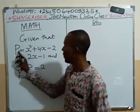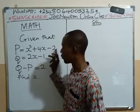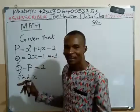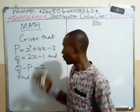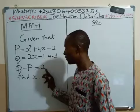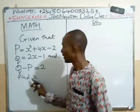Given that P is equal to x squared plus 4x minus 2. At the same time, Q is equal to 2x minus 1. And also, that Q minus P gives us 2. Then we are asked to find x.